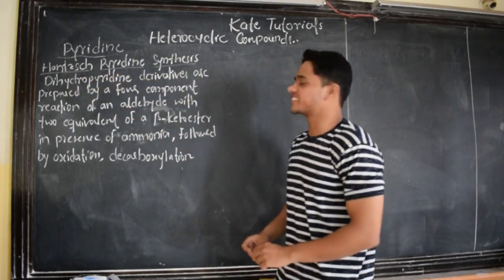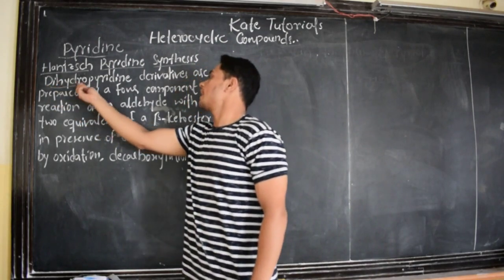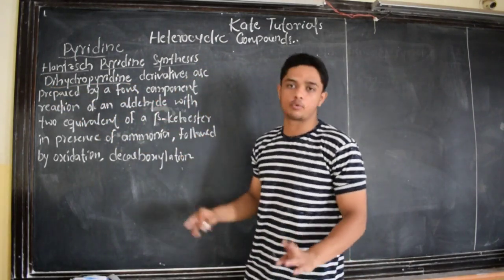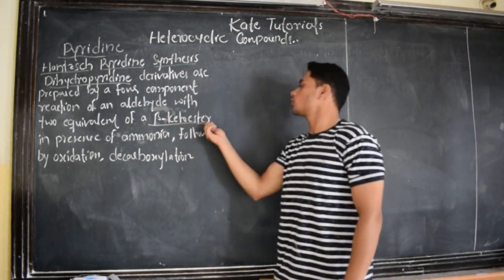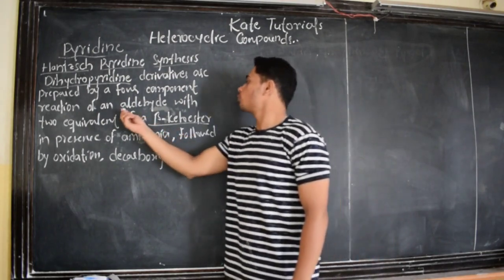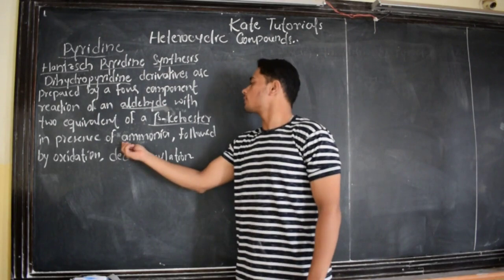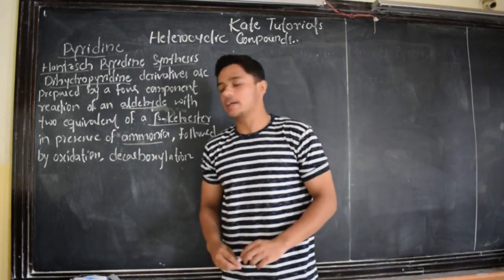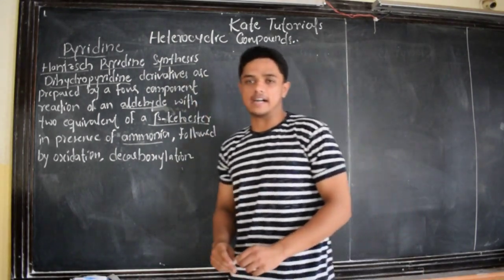This synthesis involves four components: two components are beta-ketoester, one mole of aldehyde, and one mole of ammonia. So, two beta-ketoester, one ammonia, and one aldehyde. Let's get started.